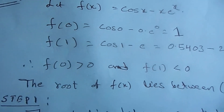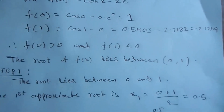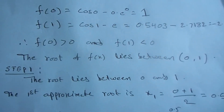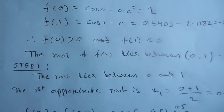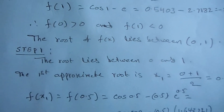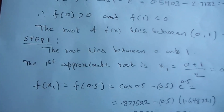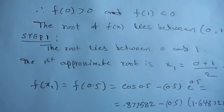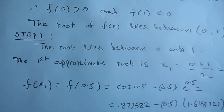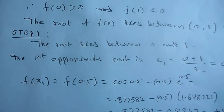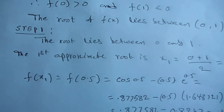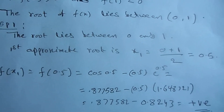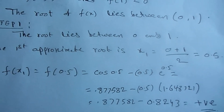Therefore, the root of f(x) lies between 0 and 1. Now the iteration process starts. Step 1: the root lies between 0 and 1. We have to compute the middle value of 0 and 1. The first approximate root is x1 = (0 + 1) / 2 = 0.5.